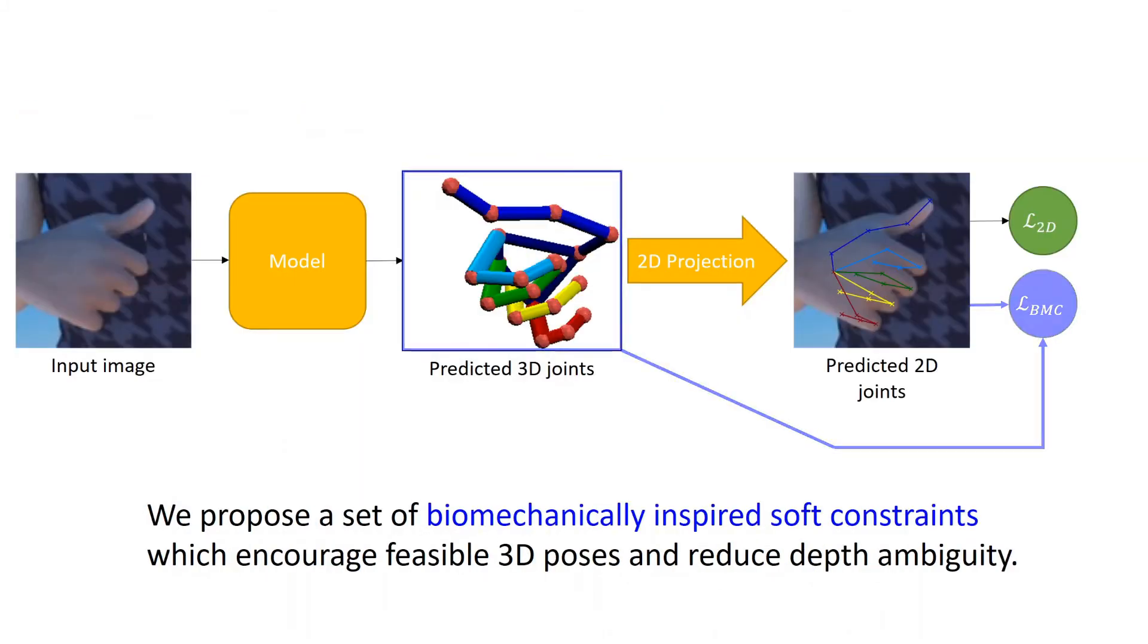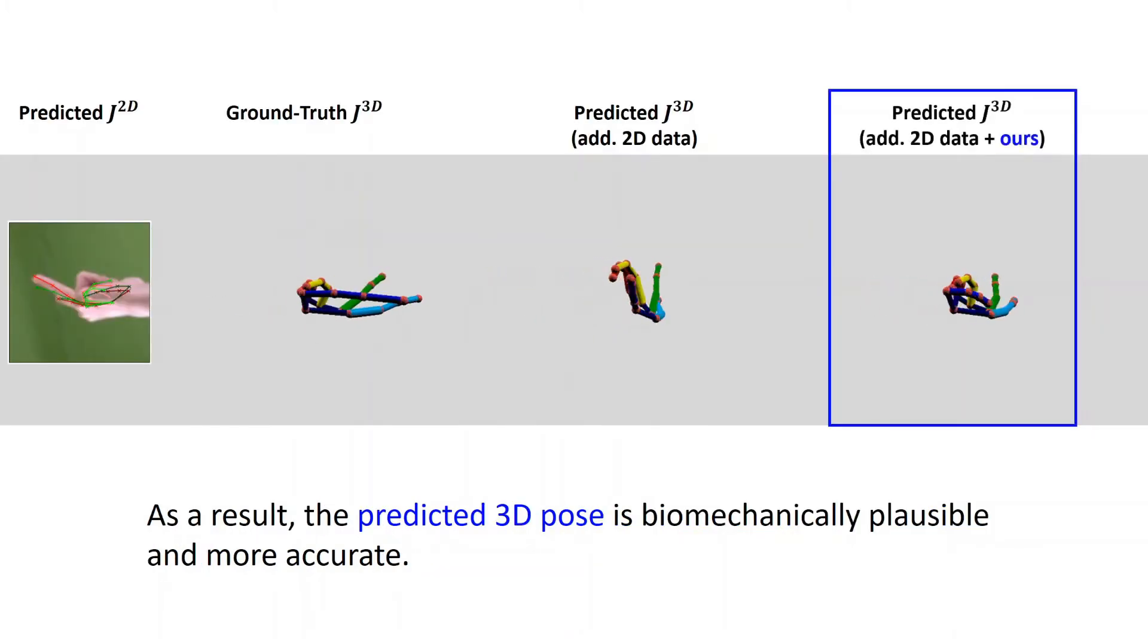To remedy this, we propose a set of biomechanically inspired soft constraints which encourage feasible 3D poses and reduce depth ambiguity. As a result, the predicted 3D pose is biomechanically plausible and more accurate.